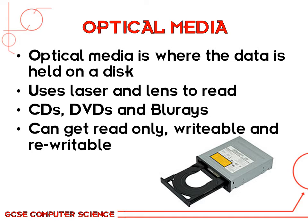Another form of secondary storage is optical disks, where the data is burned onto the surface of a disk. The term 'optical' comes from the fact that it uses a laser and an optical lens to read the data. You can get CDs, DVDs, and Blu-ray disks, each with their own main purposes. CDs are the smallest and hold around 700 megabytes — usually used for music. DVDs hold 4.7 gigabytes and usually hold video files such as movies. Blu-rays hold between 25 and 50 gigabytes and are used for high definition video and modern computer games.